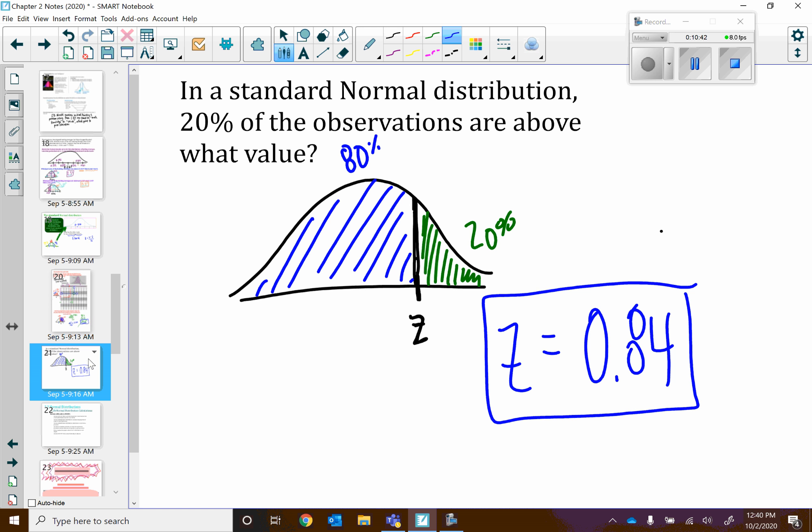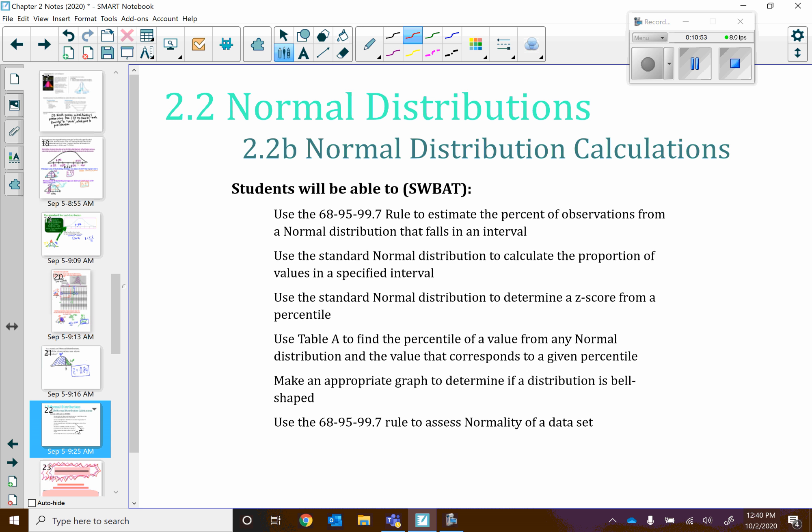All right, that was all of 2.2a. I want you to try those homework assignments. And let me know if you have questions. When we come to class on Tuesday, we're going to start this section 2.2b. And it will really solidify the things that we've been doing with this normal curve. But do work on the 2.2a homework, because it will definitely help you see what's going on here. Let me know if you need help and have a great weekend.